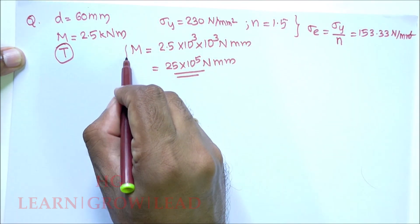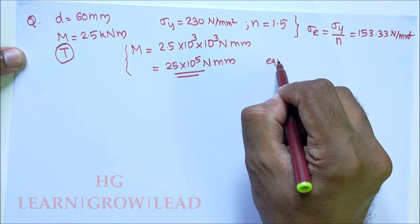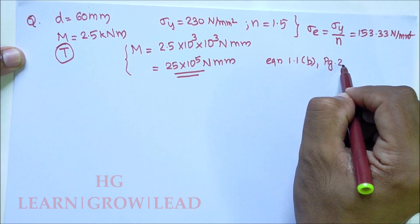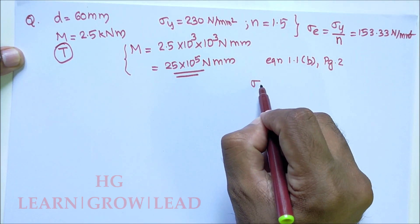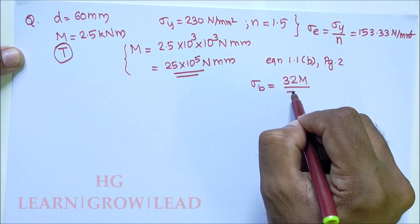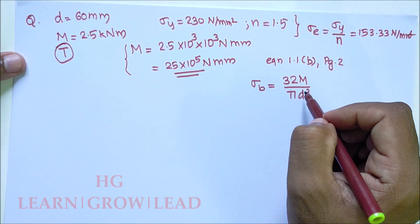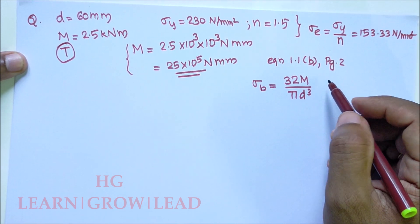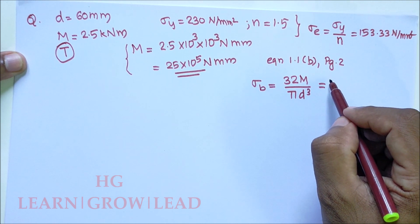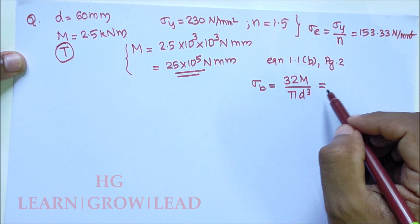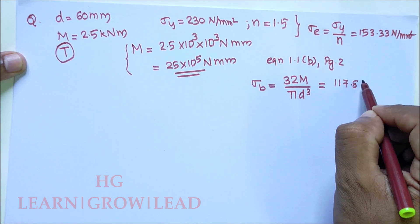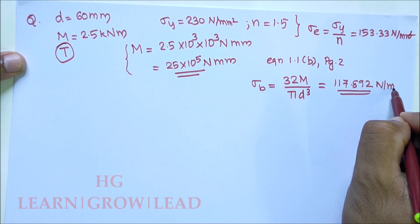Since the bending moment is given, we can use equation 1.1b, page number 2. According to that equation, bending stress sigma_b equals 32M divided by πd³. Substituting values: 32 × 25 × 10⁵ divided by π × 60³, which gives approximately 117.892 N/mm².